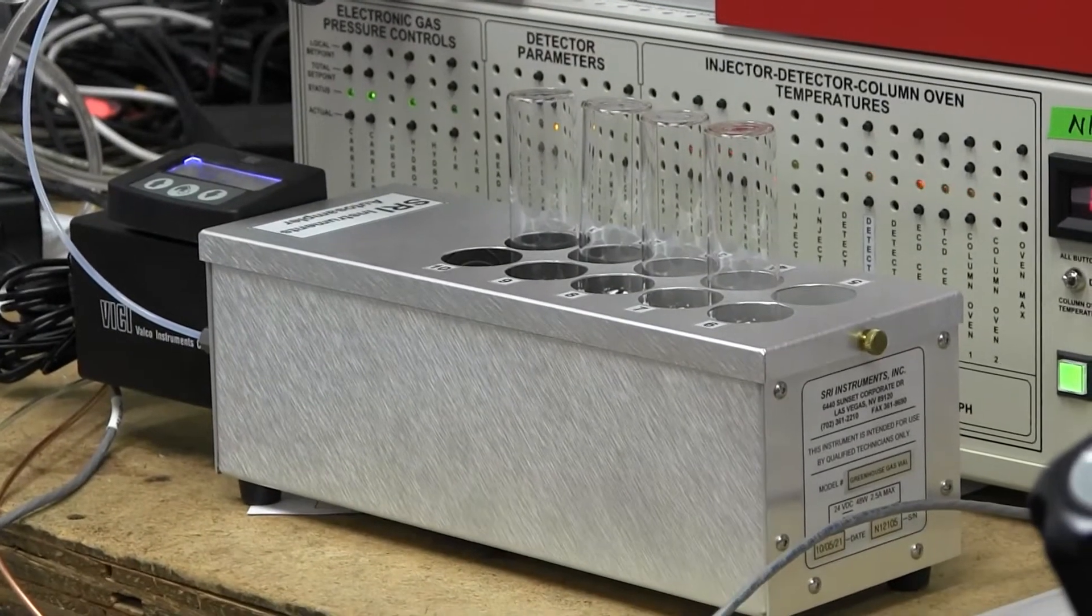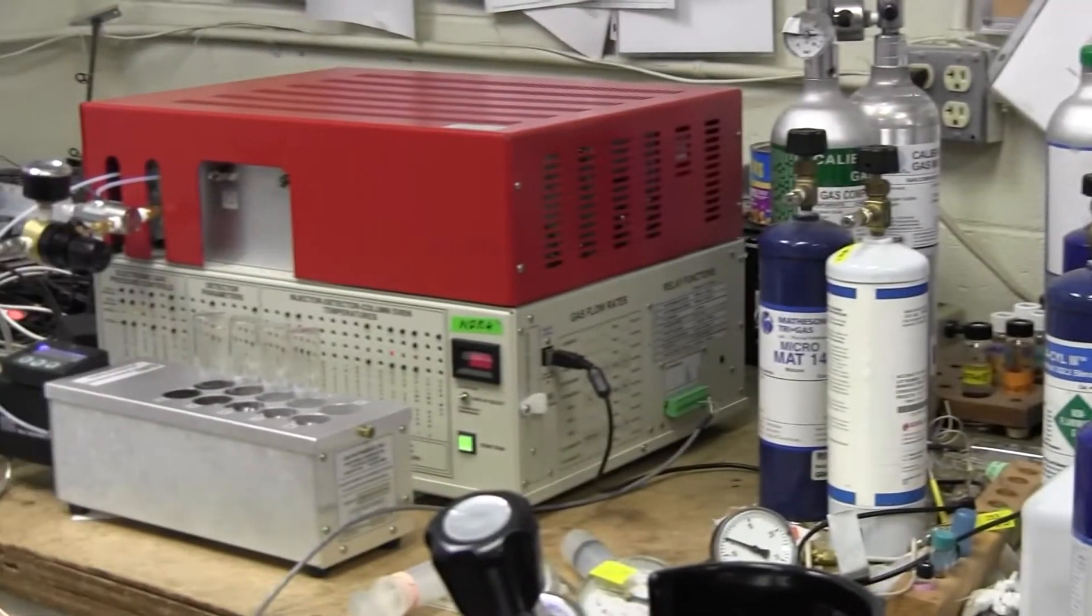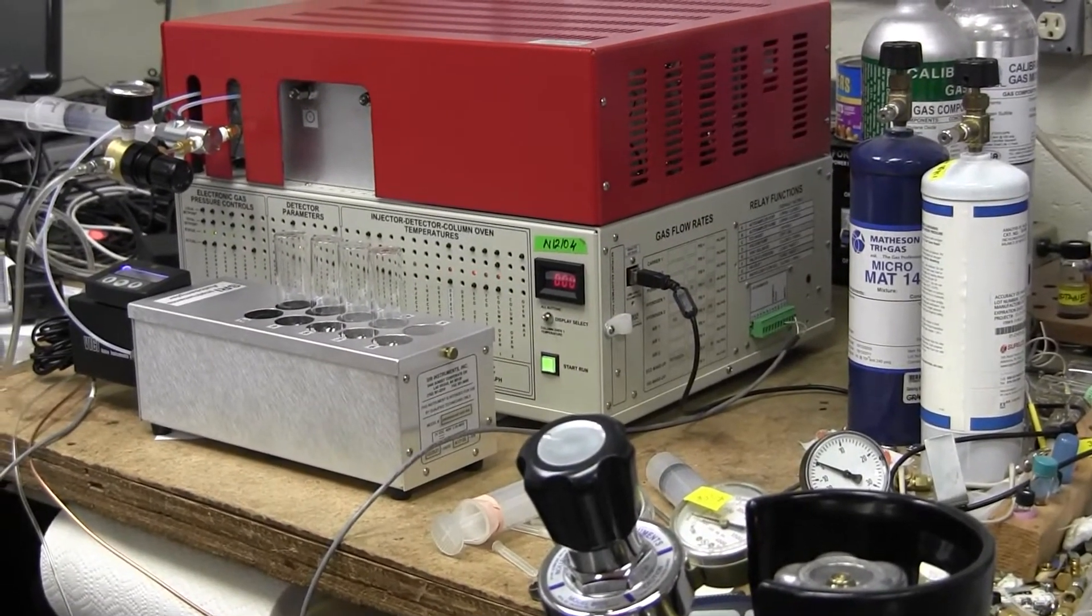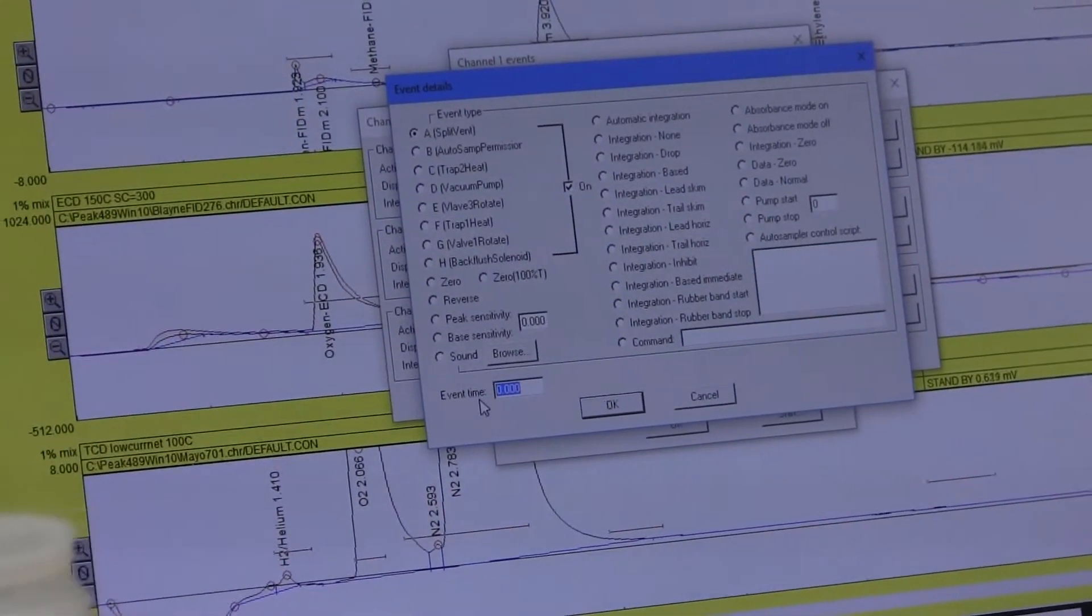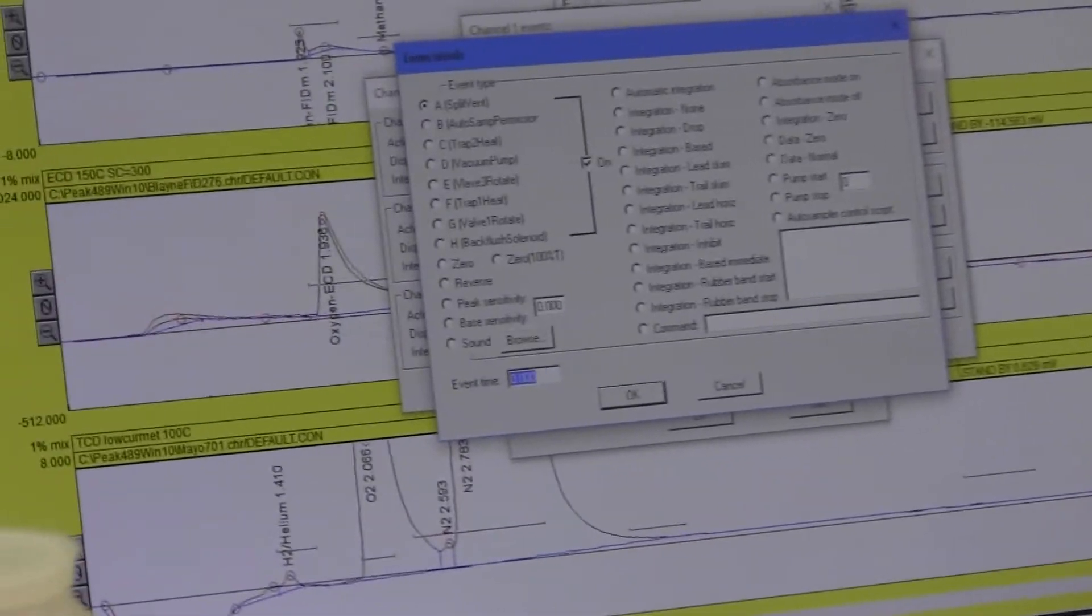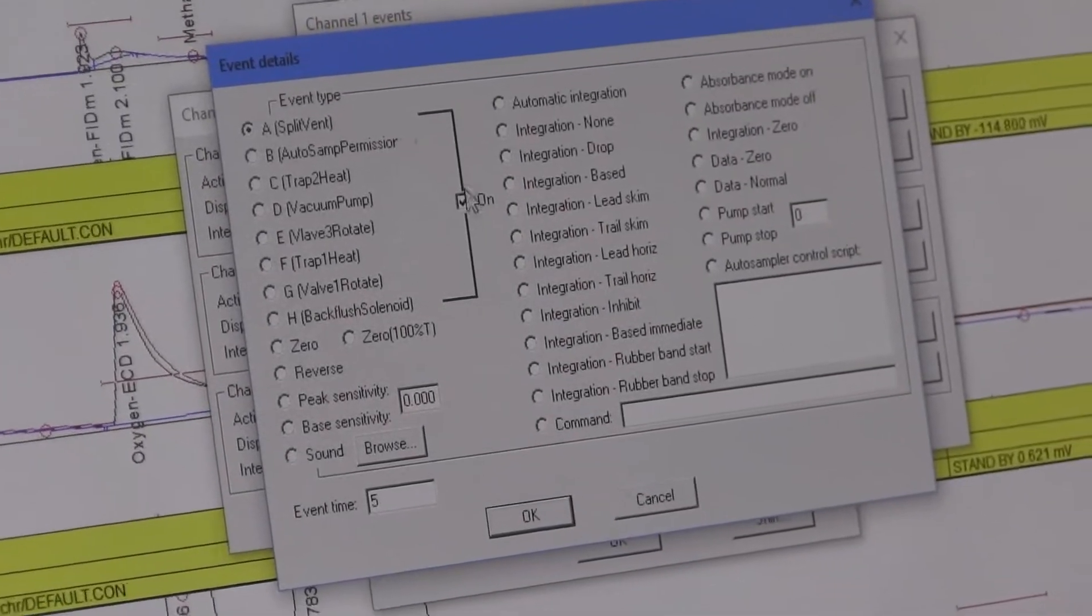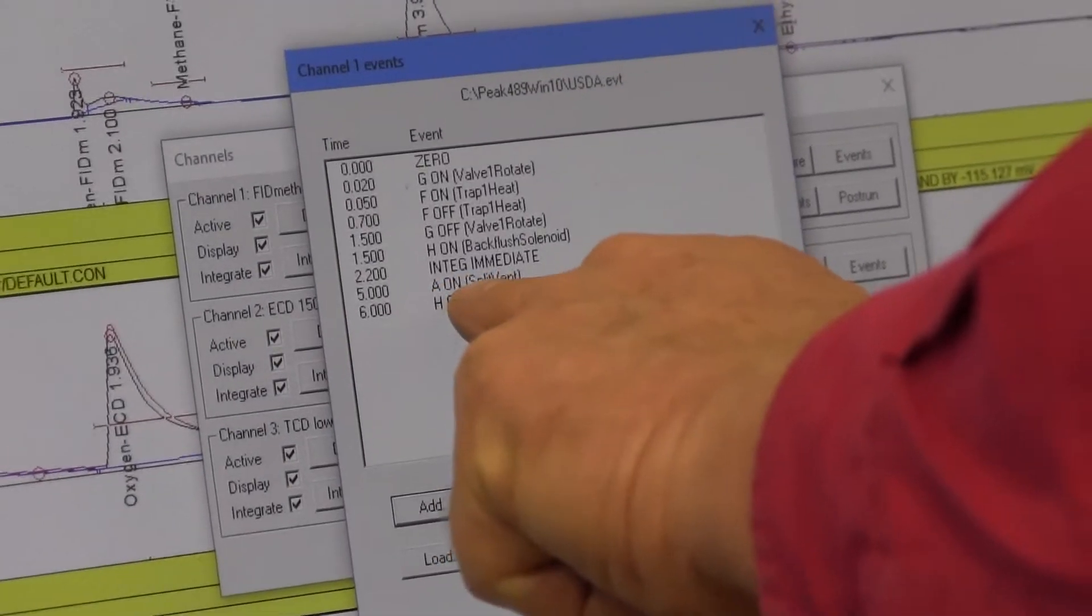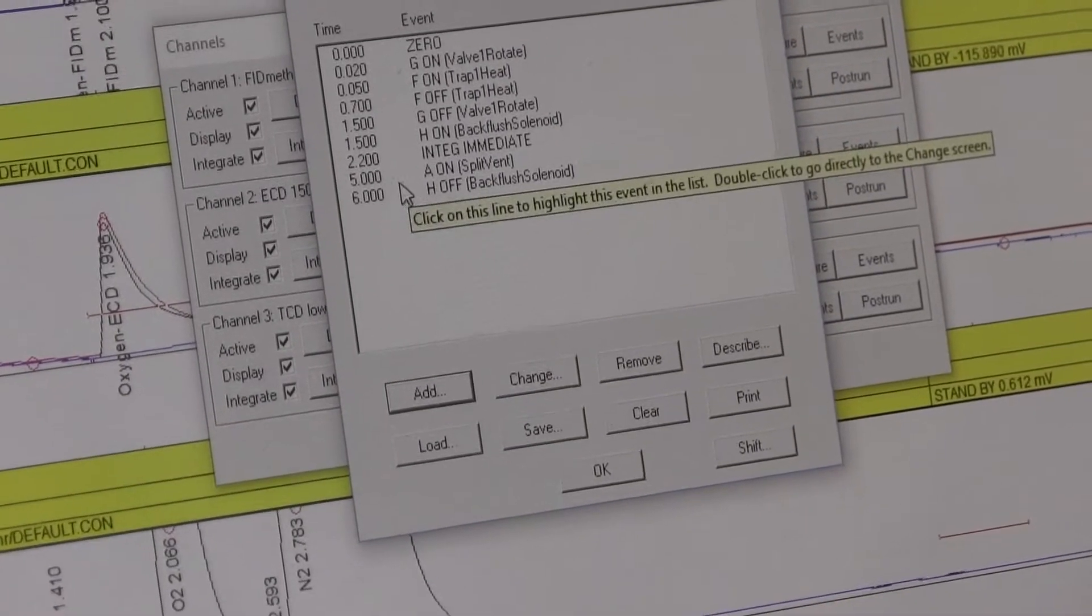So in the event table for your peak simple software, you go edit channels and then to the event table. So if I want as part of my method, I want to change the position from its current position, whatever that is to the next position, I need to add an event in the software. So I'm going to do this at five minutes into the analysis. Why? I'm just, it's just an example. Usually you do this at the end of the analysis or the beginning, but just to show the mechanics of how you do it. So you go to the event time, you put in the time that you want the event to occur, and then you click relay A and then on.